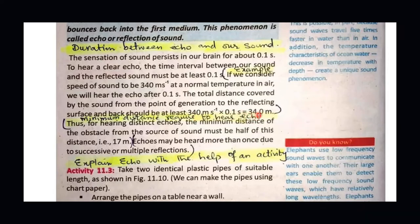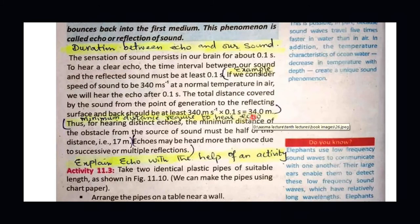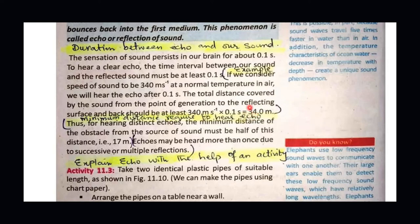So the total distance covered by the sound from its point of generation, to the reflecting surface and back, is 34 meters. But the minimum required distance from you to the wall, if you want to hear an echo, is half of this — which is 17 meters. This means you must be at least 17 meters away from any surface for reflection to produce an echo.